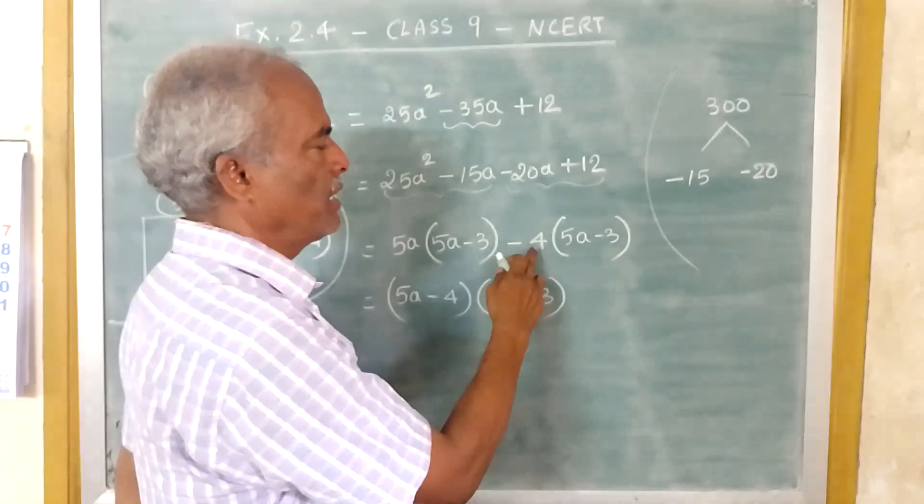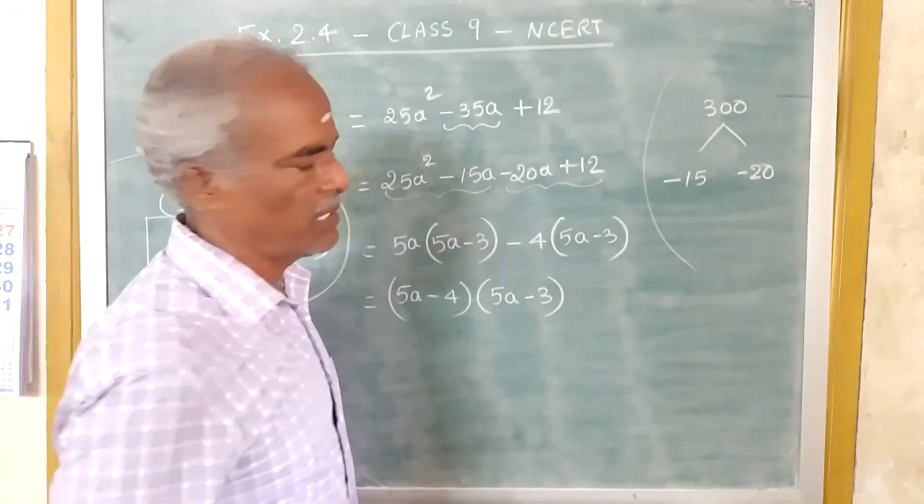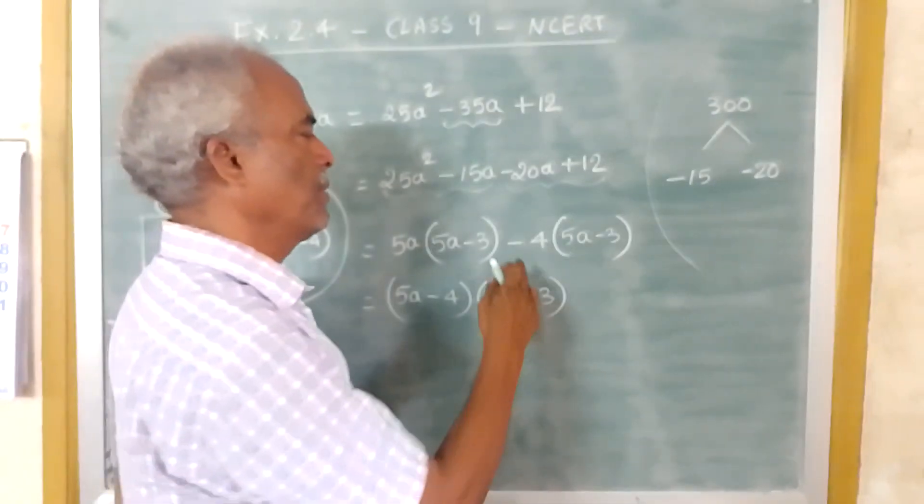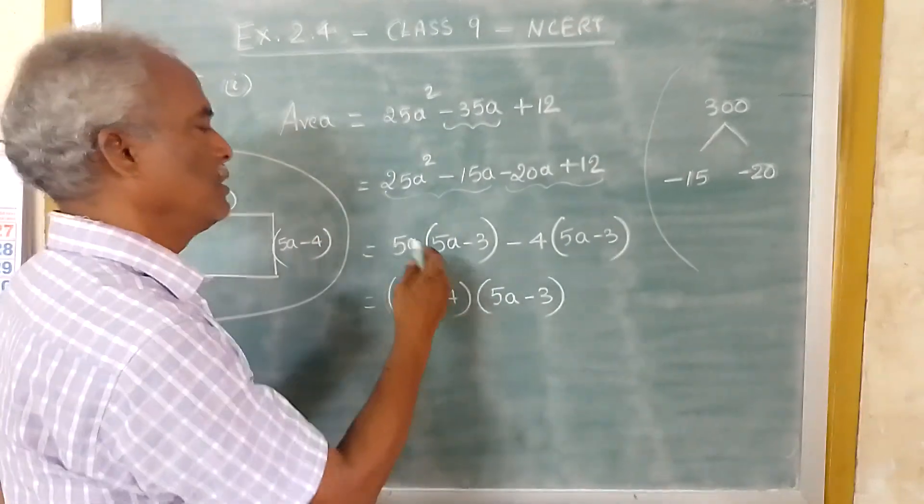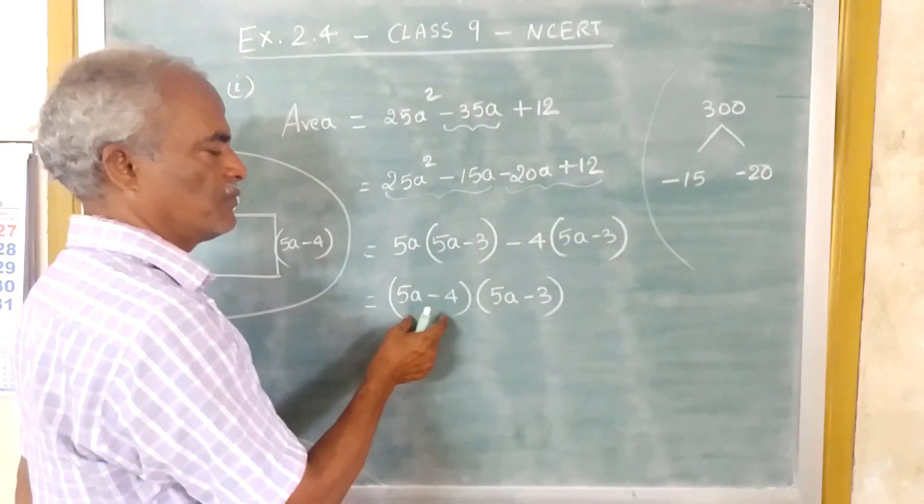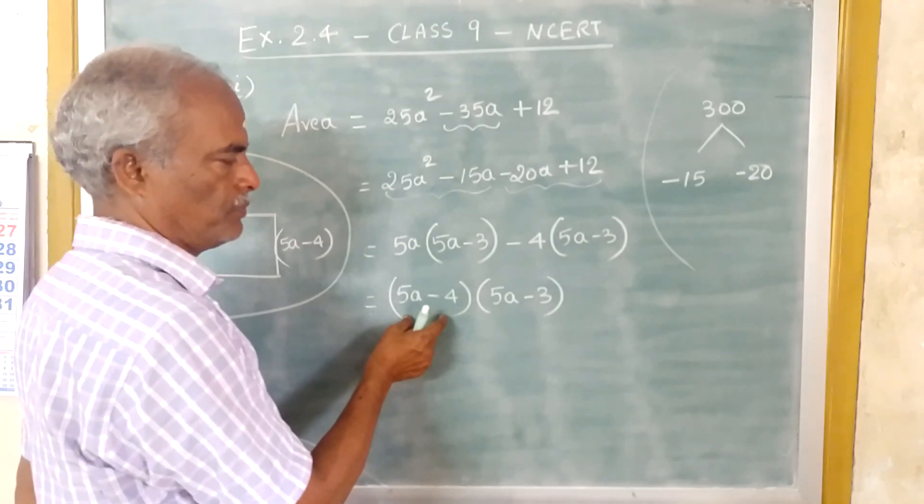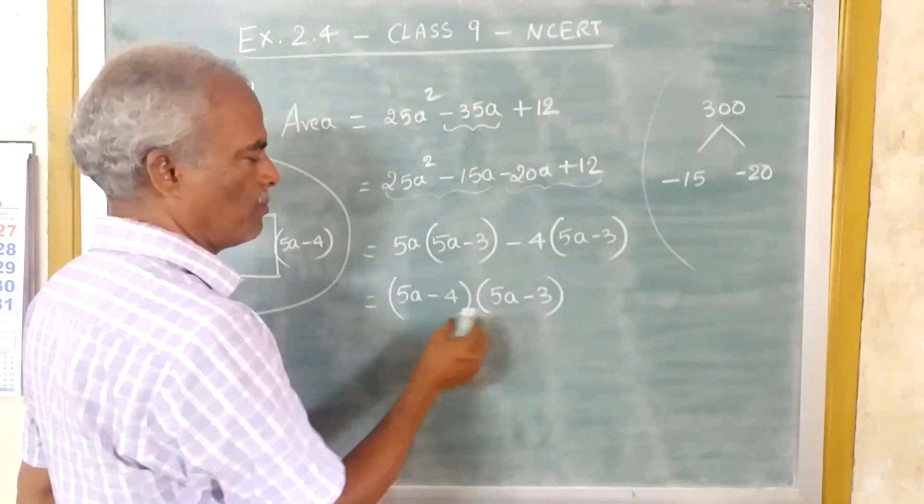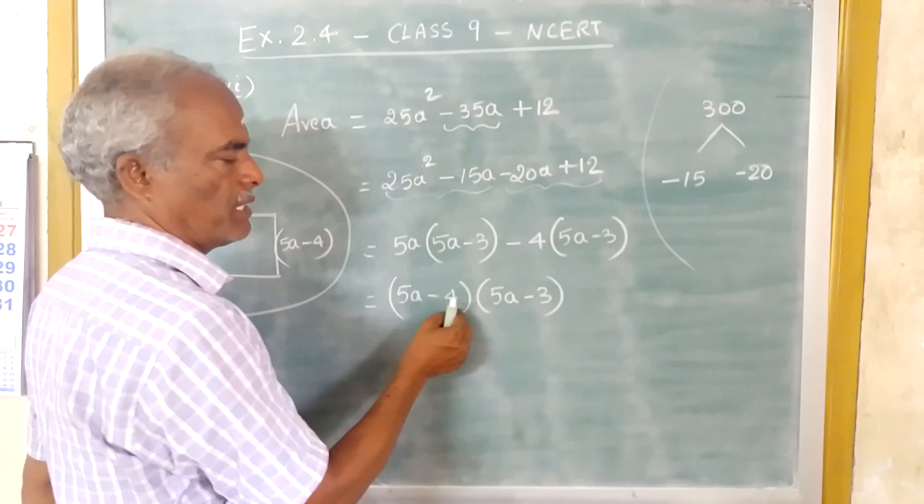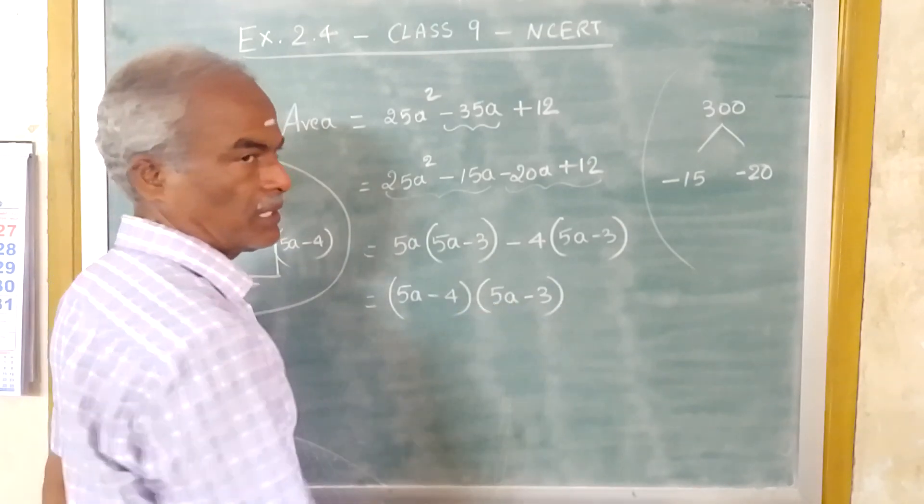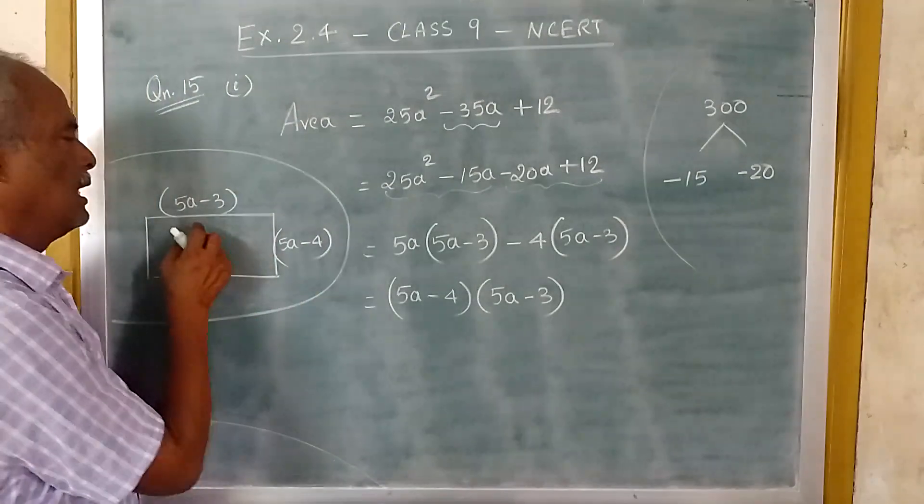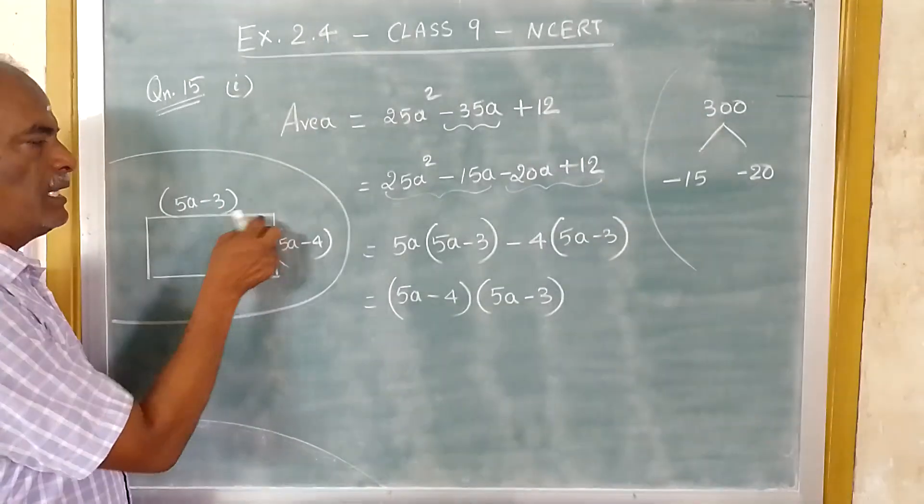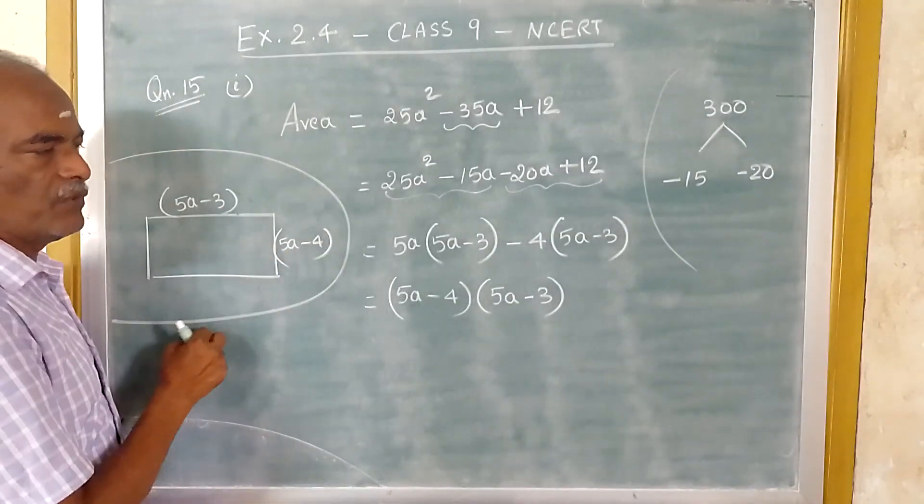Now if you take common term for these, minus 4 is common. Minus 4 into 5A you will get minus 20A. Minus into minus plus 4 into 3 is 12. Now in these two terms, 5A minus 3 is common. So you can write it as 5A minus 4 into 5A minus 3.